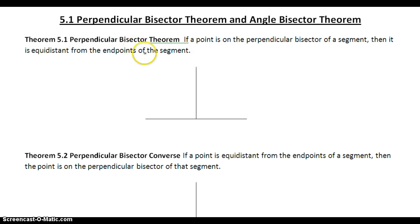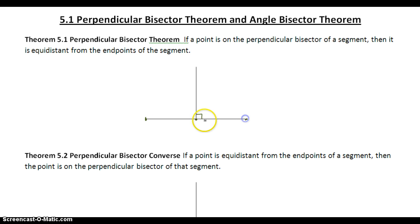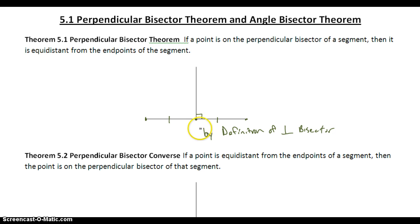The perpendicular bisector theorem says this: if a point is on the perpendicular bisector of a segment, we first have to start with a perpendicular bisector. So we know that these two segments have to be perpendicular and they have to be a bisector. So this segment and this segment are going to be congruent — we're going to have a midpoint. By the definition of perpendicular bisector, we know these two pieces of information are true: we have perpendicular segments, and the segment is bisected.